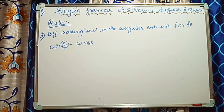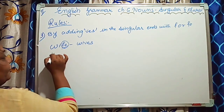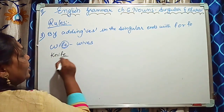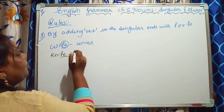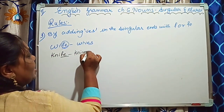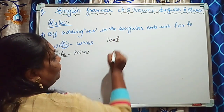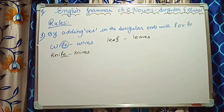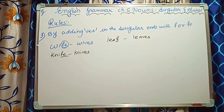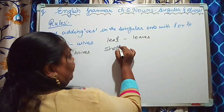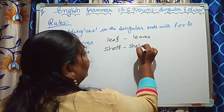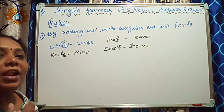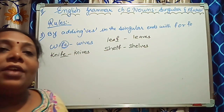For example, knife — instead of F, we write KNIVES. Leaf — F is there — so we write LEAVES. Handkerchief becomes handkerchiefs. Shelf — SHELF — instead of F, we add VES.